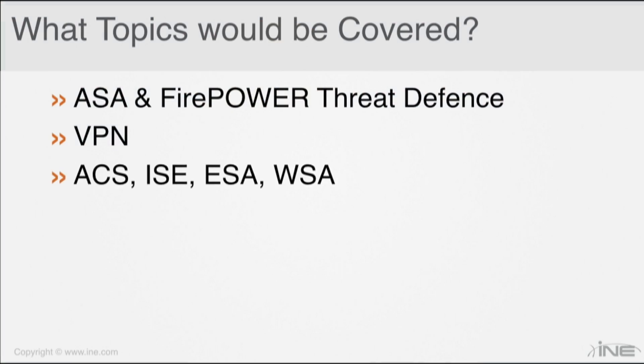Day 4 is going to be about ACS, ISE, Email Security Appliance and Web Security Appliance. Here we would look at Cisco Secure Access Control Server, which is the ACS, basically looking at authenticating users, accounting and authorizing the respective access that the user gets. We would also look at 802.1X and MAB authentication using Identity Service Engine, TrustSec, we would also look at the Email Security Appliance and its features, and we would look at Proxy Services and how the Web Security Appliance works.